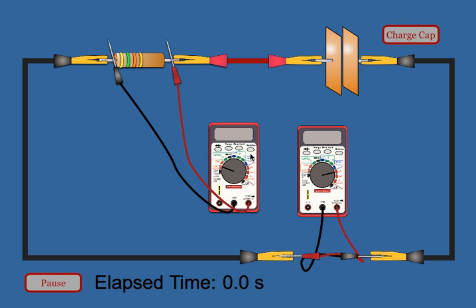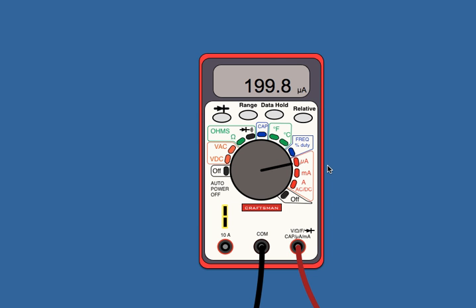In this lab, you'll be looking at the discharging of a capacitor through a resistor. What we'll be doing is charging our capacitor by hitting the button that says 'charge capacitor.' You'll see that the left side becomes positive and the right side becomes negative. The simulation pauses as soon as you charge your capacitor so that you can measure the voltage and the current coming out of the capacitor at the moment it was charged.